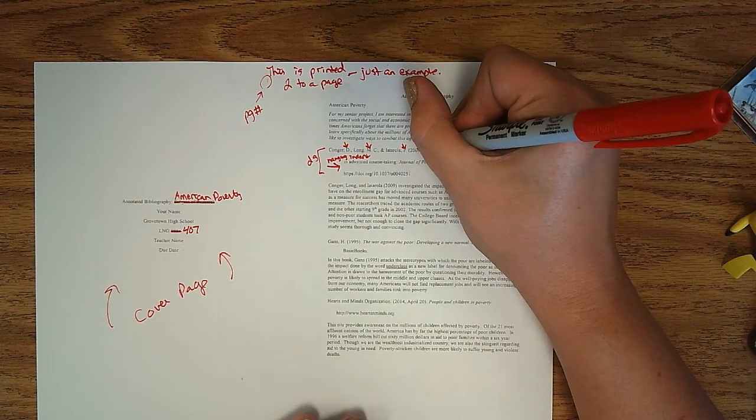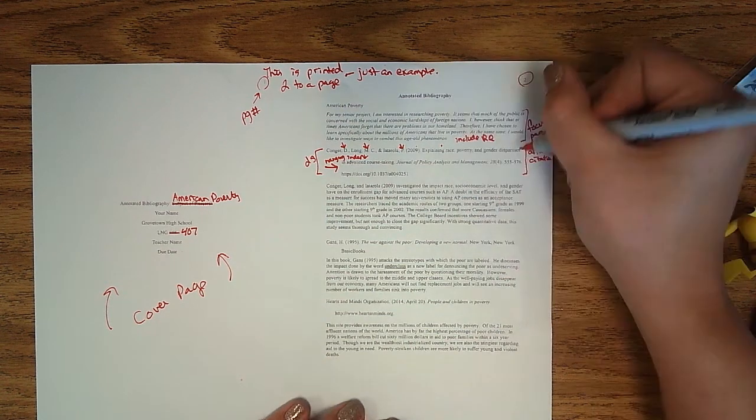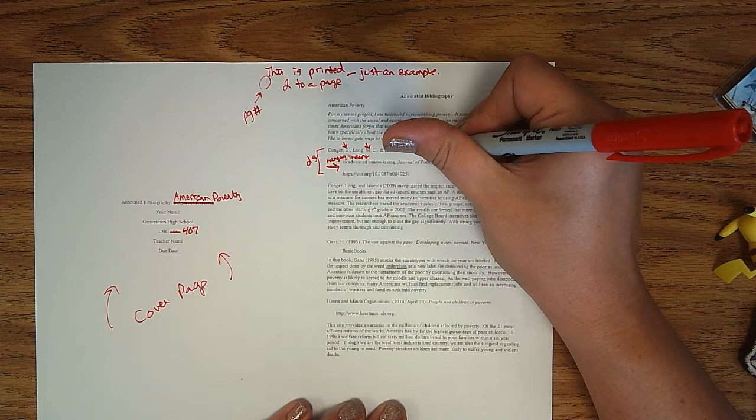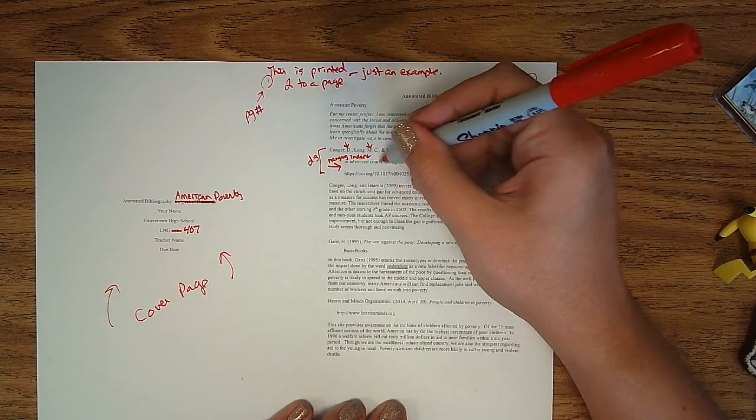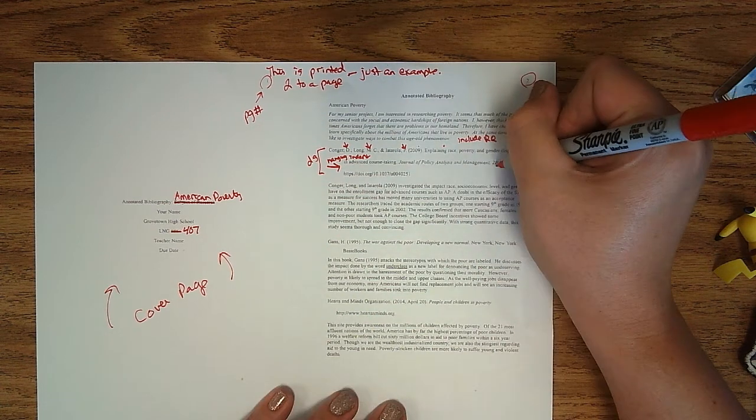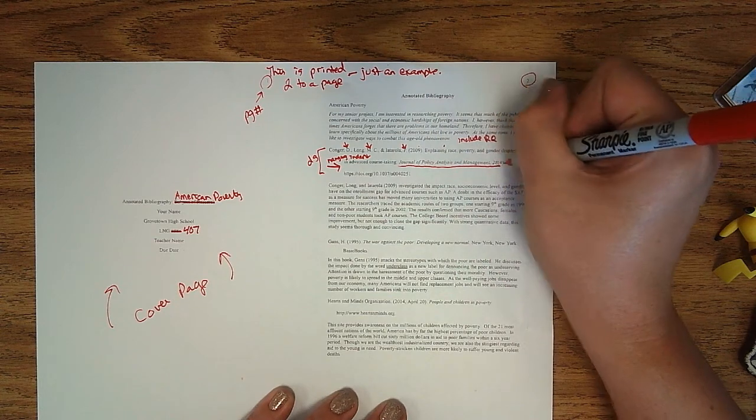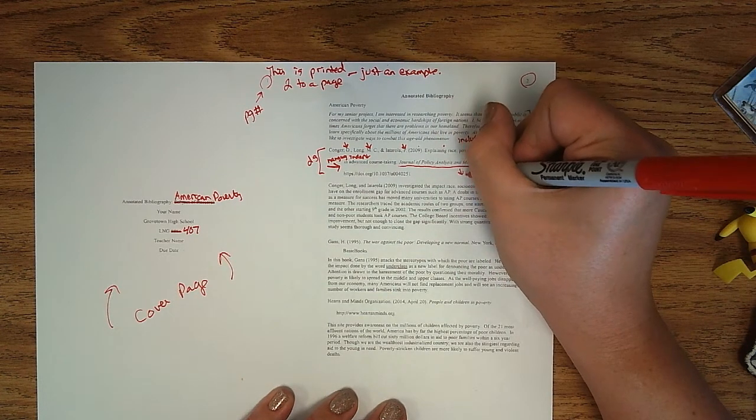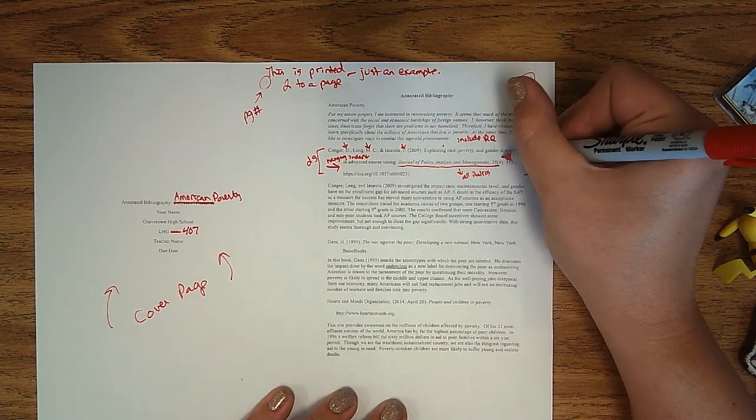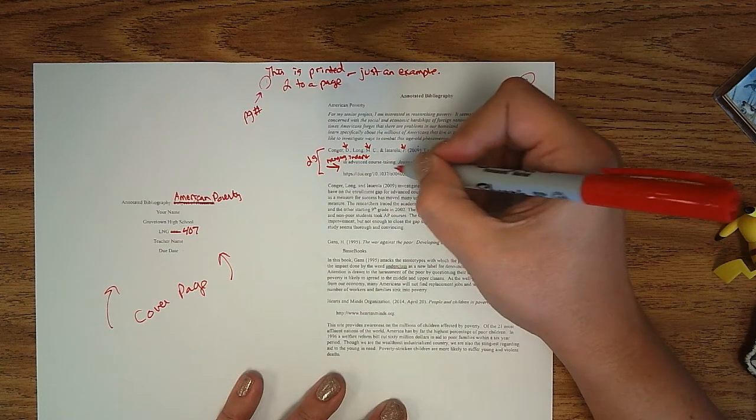Then there is author here. Title of the article. And you'll notice that this is written like a sentence with only the first word being capitalized. The rest of it is not capitalized. Then you have the journal title which is in italics along with this. So all of this right here is in italics including that number, the journal number. Then you have the issue number, the page numbers, and the DOI number.